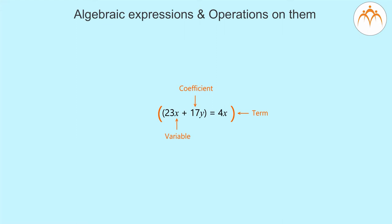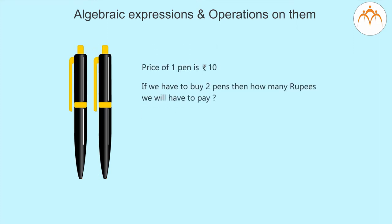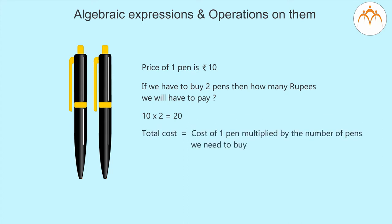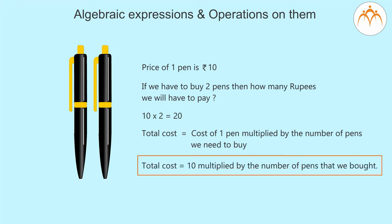For that purpose, we will take a simple example. Suppose that the price of a pen is rupees 10. If we have to buy two pens, then how many rupees will we have to pay? One pen costs 10 rupees, hence two pens will cost 10 into 2 equal to 20 rupees. Here we use the formula: total cost = cost of one pen multiplied by the number of pens we need to buy. Since one pen costs rupees 10, total cost = 10 multiplied by the number of pens bought.